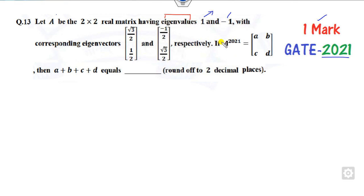There are many ways to solve this, but let me show you the shortcut method. Remember that the trace of matrix A equals the trace of A raised to power N, provided the eigenvalues and eigenvectors are linearly independent. Since the product is 0, they are linearly independent and the eigenvalues are distinct. The value of A plus D equals 1 minus 1, which is 0.